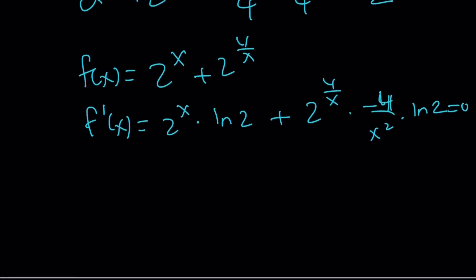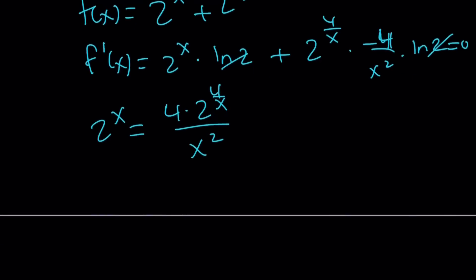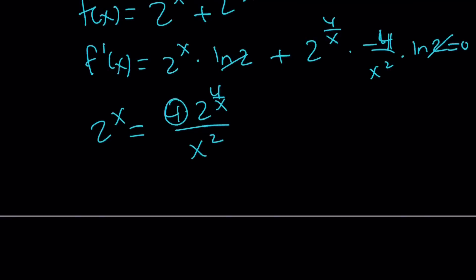And from here, we're going to pull out ln 2. So we can divide by ln 2. And we get something like this, 2 to the x equals 4 times 2 to the power of 4 over x over x squared, and so forth. It's not always easy to find a solution in this case, but you can kind of combine a couple things here. Like, this is 2 to the second power. So we get x squared times 2 to the x equals 2 to the power of 4 over x plus 2.